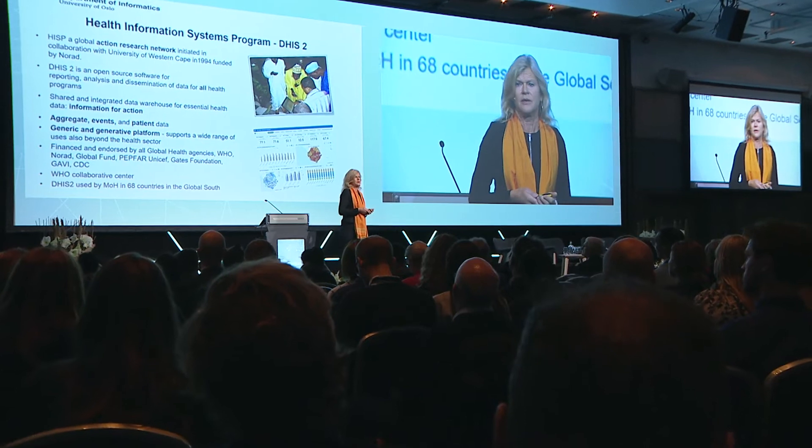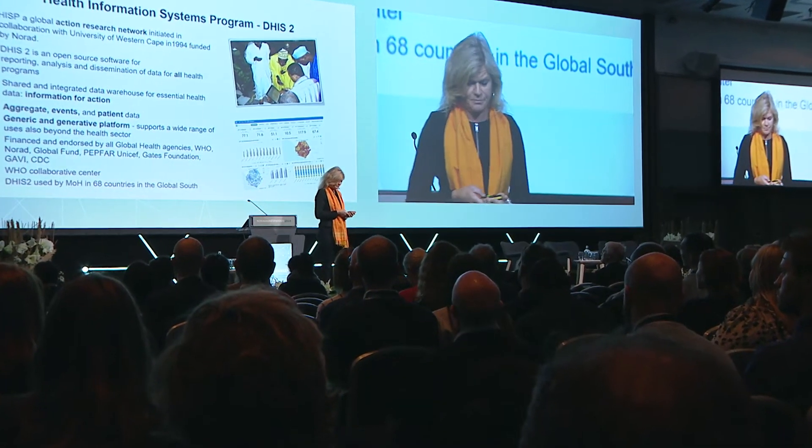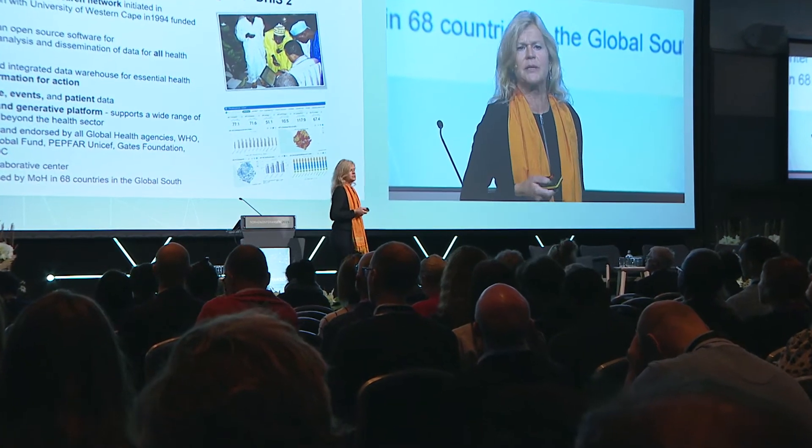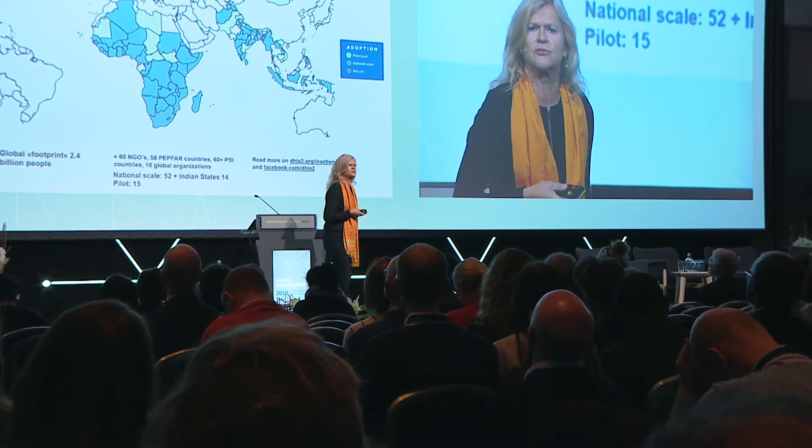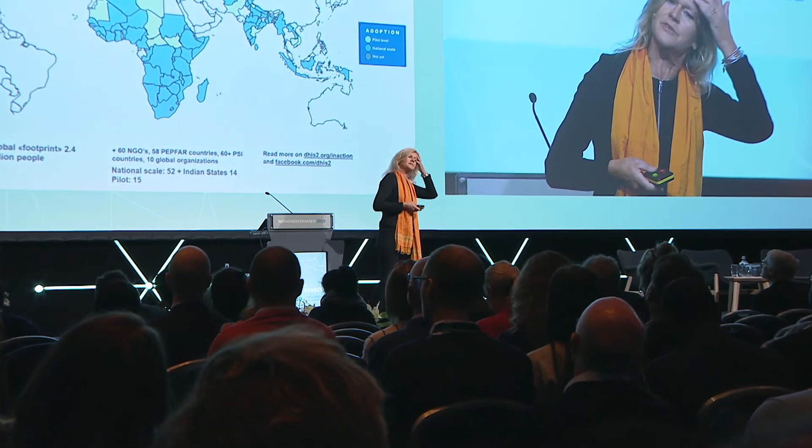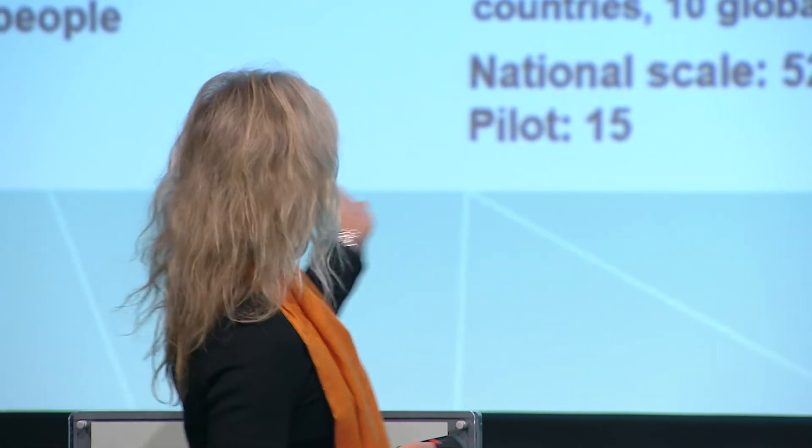We are also a WHO Collaborative Center. Over the last seven years, we have seconded people from the University of Oslo to work at the WHO. The 68 countries we are mentioning — I will show on a map where those are. This map was updated two days ago through DHIS2. The 2.4 billion population figure represents the population data from each country that uses DHIS2 as a fully scaled national system. When we mention the 68 countries, we count India as one country, not all 15 states. The PEPFAR countries constitute 58 additional, but our focus is on the ministry-level national systems.